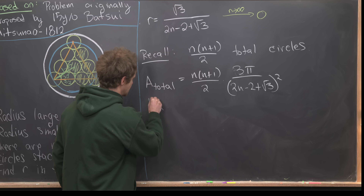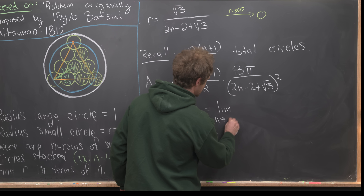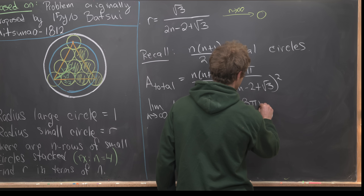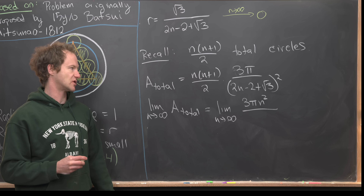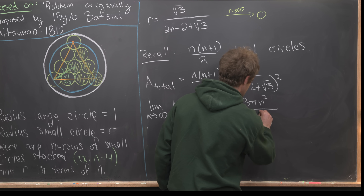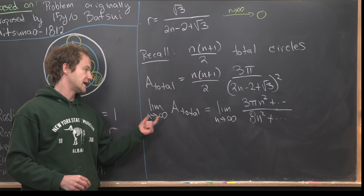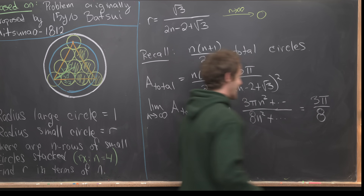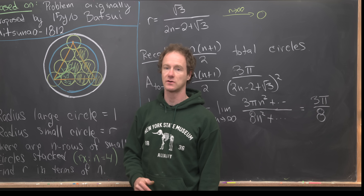Now let's find the limit. The limit as n goes to infinity of the total area equals the limit of 3π times n(n+1) over (2n minus 2 plus √3) squared. Keeping only the leading terms: the numerator's leading term is 3π·n², and the denominator's leading term is (2n)² = 4n², giving 8n² overall. So the limit equals 3π over 8.